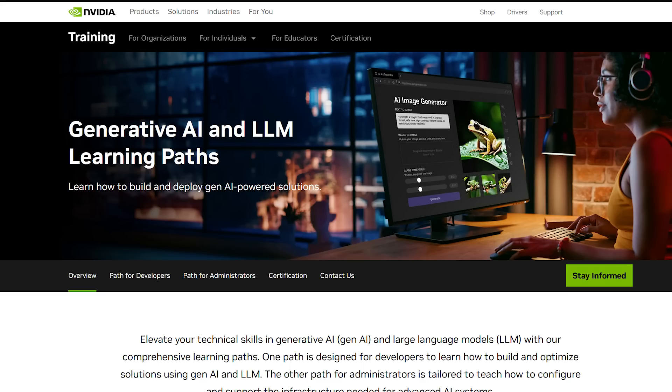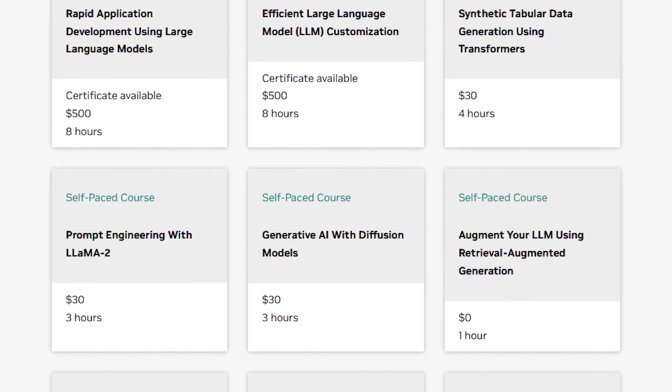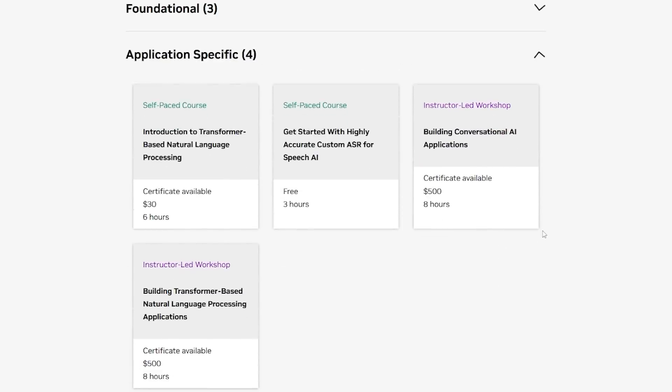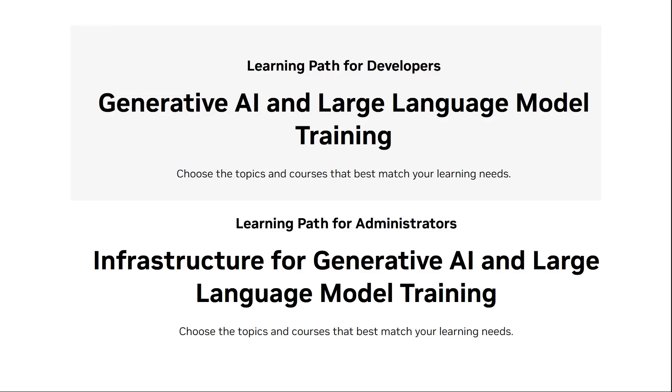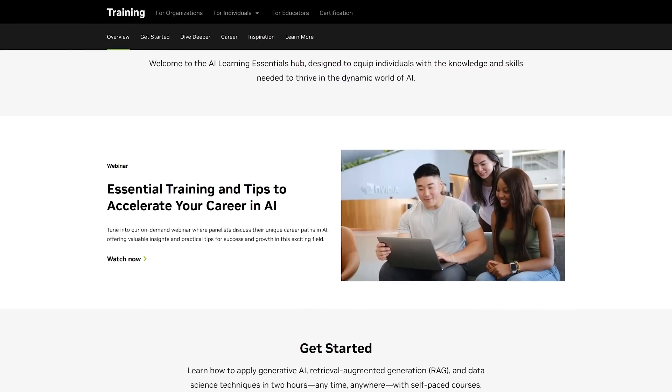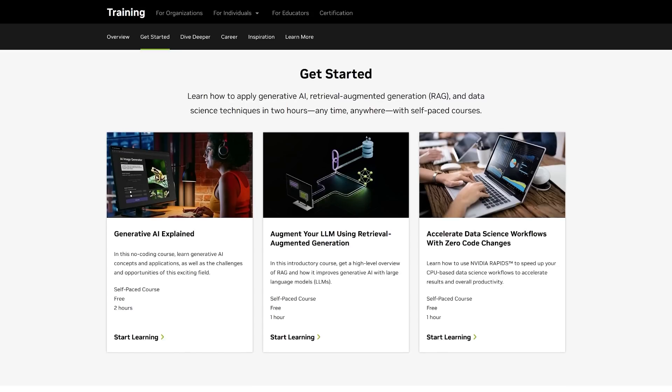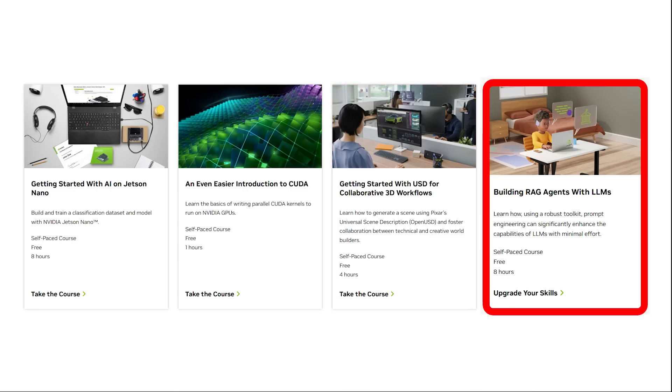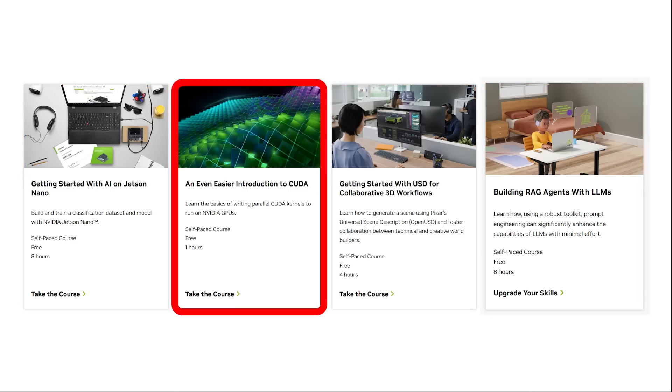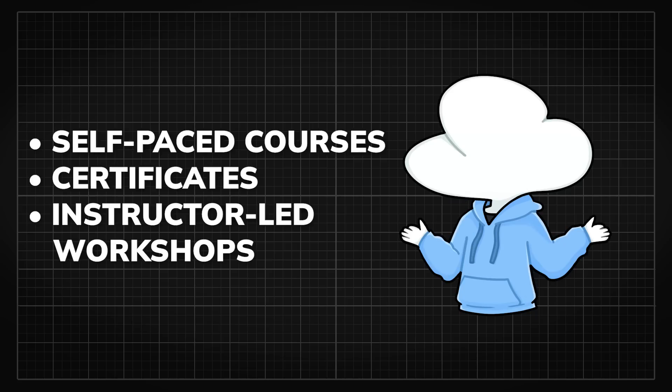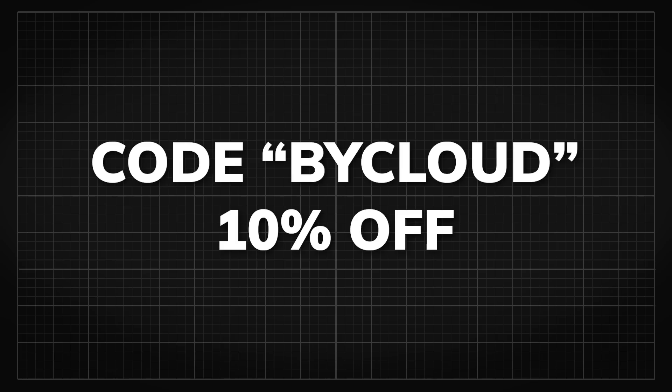The first one is called Generative AI Learning Path, where you can learn how to build and deploy Gen AI-powered solutions, which helps you master generative AI. This program covers the fundamentals and the applications specific to production courses, with two separate learning paths, one for developers and another for administrators. The second one is called the AI Learning Essentials, which is designed to equip students in their early careers with the knowledge and skills needed to thrive in the dynamic and collaborative environment AI has created. It has free self-paced courses on OpenUSD, RAG, Jetson Nano, and even an introduction to CUDA. So go check them out using the link down in the description. And for all self-paced courses, certificates, and instructor-led workshops, you can use the code BYCLOUD for 10% off.